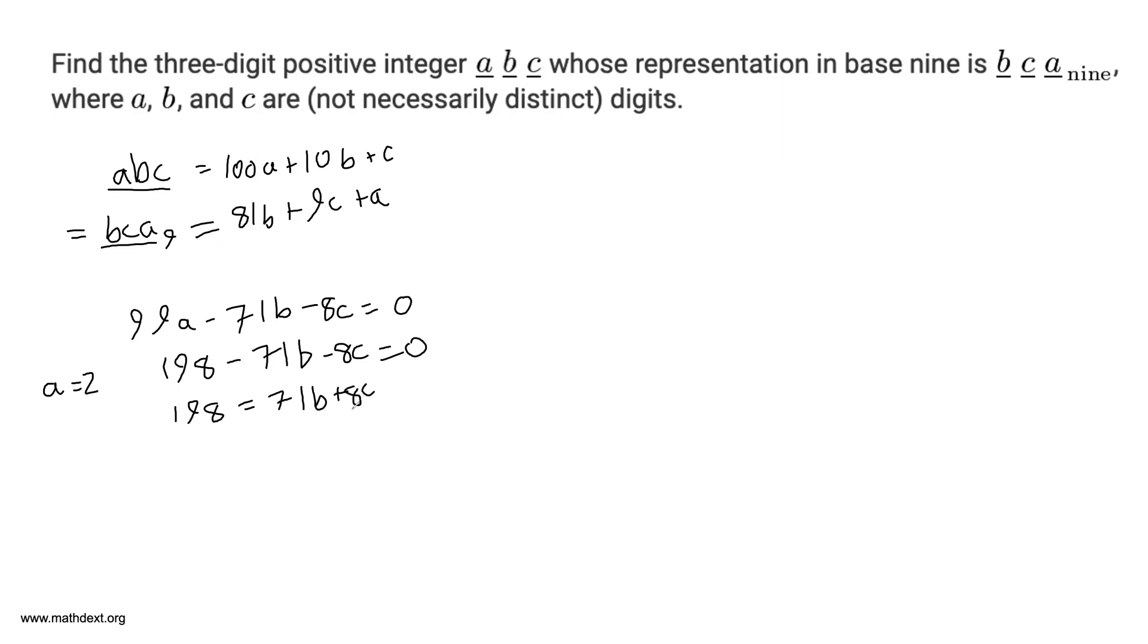And what we can do is we can once again try out B is equal to 0, 1, and 2. If B equals 0, you must have 198 is equal to 71 times 0 plus 8C. It gives us a solution of C is a decimal 24.75. That's not an integer, nor is that one digit. So you can discard B equals 0.